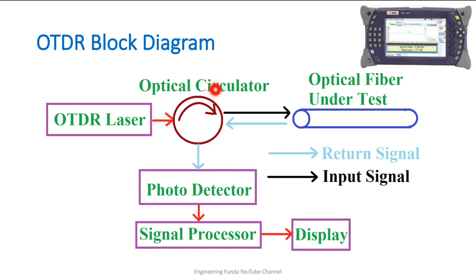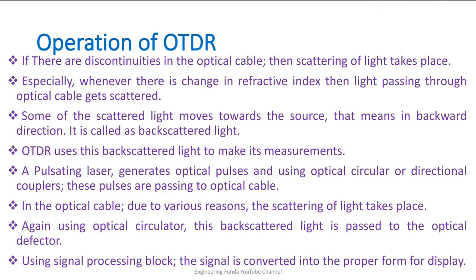The circulator circulates the signal in a clockwise direction, so the input goes into the fiber and the reflected signal comes back to the photo detector. The detected signal is given to a signal processor and on the display we observe the position of the fault and what category of fault is happening. If there are discontinuities in the optical cable, scattering of light takes place, especially whenever there is a change in refractive index, and some of the scattered light moves backward toward the source.